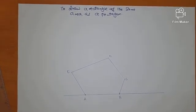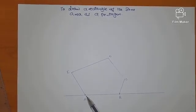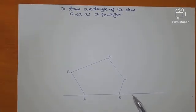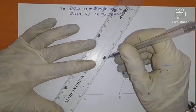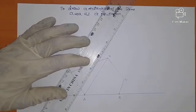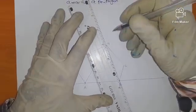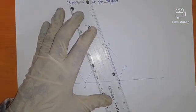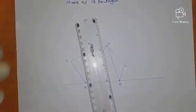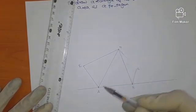The procedure we shall follow: step one, we shall connect diagonals from D to A and D to B. That is the first step.